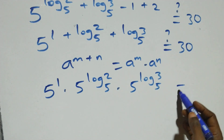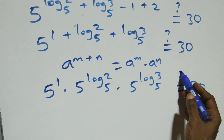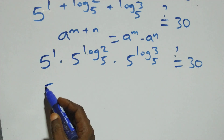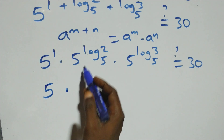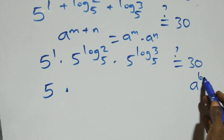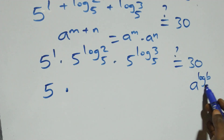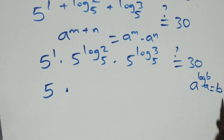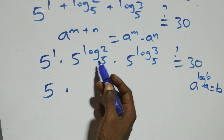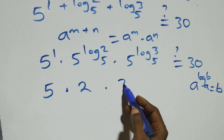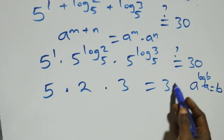Then here, 5 raised to power 1 is the same as 5, then times. This follows from the law of logarithms: when we have a raised to power log b, to base a, which equals to b. So 5 raised to power log 2 base 5 gives us 2, and 5 raised to power log 3 base 5 gives us 3. This equals to 30 on this side.